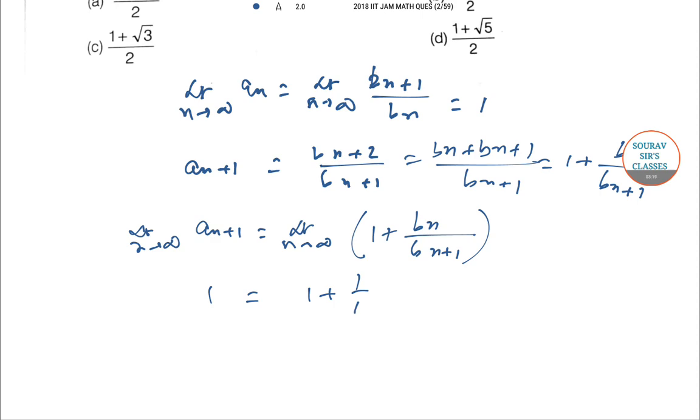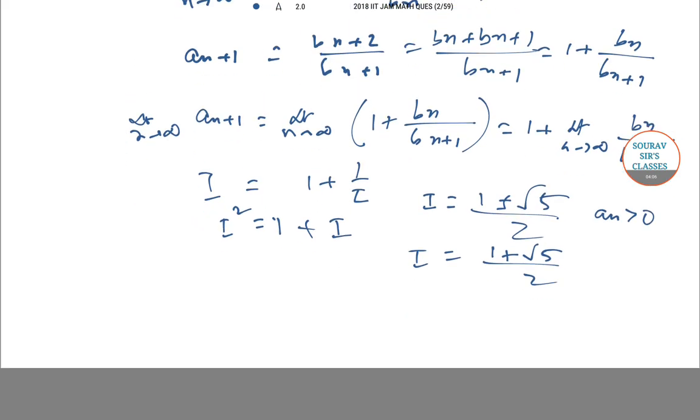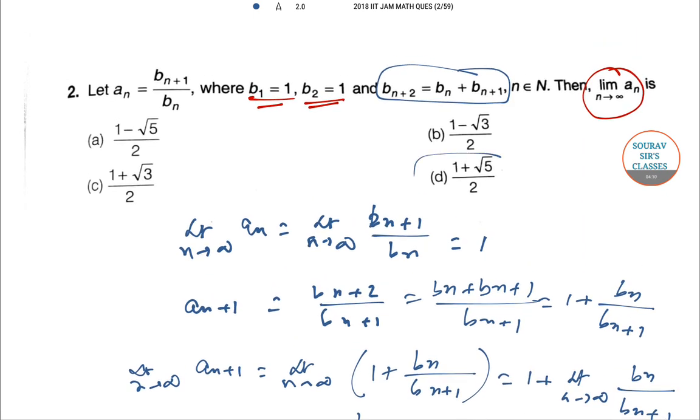This is 1 plus limit n tends to infinity b_n/b_{n+1}, which is the reverse of this. So I^2 equals 1 + I, giving I^2 - I - 1 = 0. If we solve by quadratic formula, I = (1 ± √5)/2. As a_n is positive, we can write I = (1 + √5)/2. Hence the answer is D.